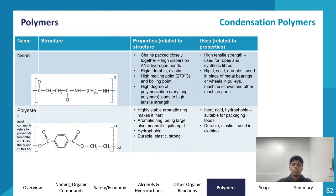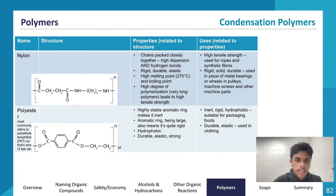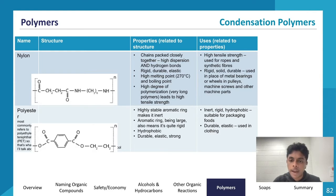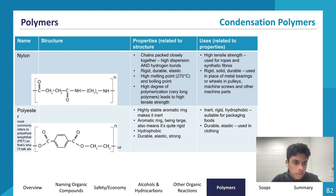Moving on to condensation polymers — nylon 6-6 is the main one you'll encounter. Its chains are packed closely together with strong dispersion forces and hydrogen bonds, making it rigid, durable, and elastic with a high melting and boiling point. It has a high degree of polymerization, giving it high tensile strength. This allows it to be used for ropes and synthetic fibers. Its rigid and durable nature means it's also used in place of metal bearings, machine parts, and gun casings.